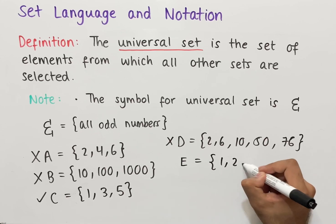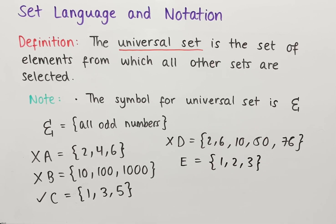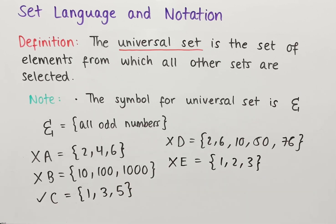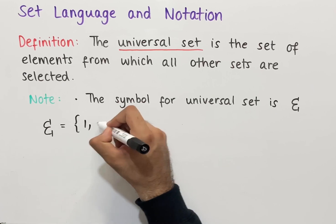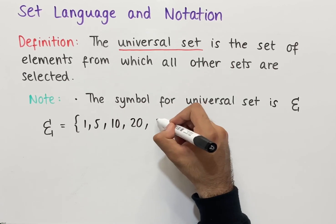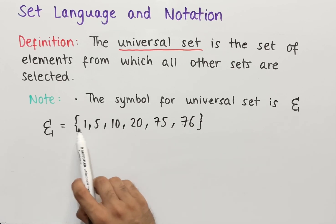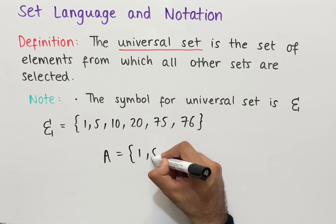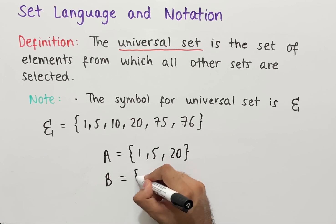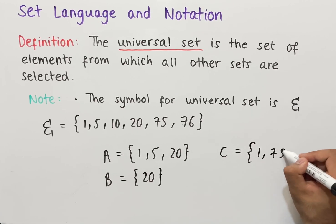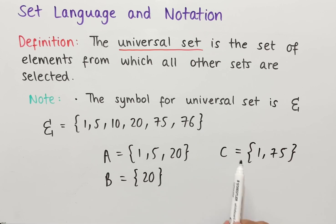Set D wouldn't be fine because it contains even numbers. If we had a mixed set like one, two, three — even though there are two odd numbers, the presence of the even number two makes the entire set invalid, since every element must be odd. As a final example, if the universal set is one, five, ten, twenty, seventy-five, and seventy-six, then all other sets must be combinations of those elements only. For instance, set A could be one, five, twenty; set B could be just twenty; set C could be one and seventy-five — all completely fine.